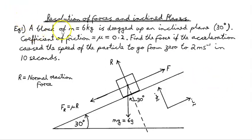We've got a block of mass 6kg dragged up an inclined plane. The plane is inclined to the horizontal at 30 degrees. The coefficient of friction mu is 0.2, and the friction force is the coefficient of friction times the reaction force FR. Find the force if the acceleration caused the speed of the particle to go from 0 to 2 meters per second in 10 seconds.